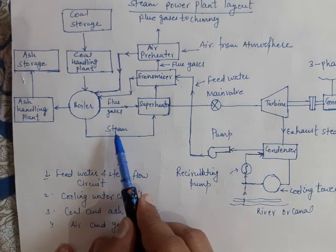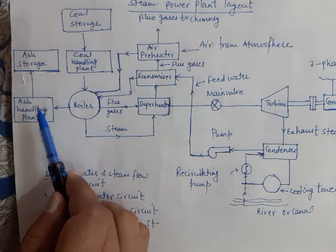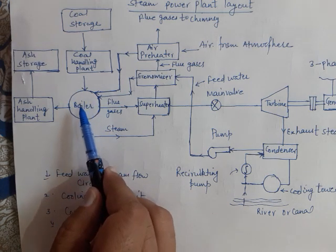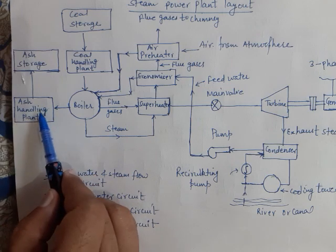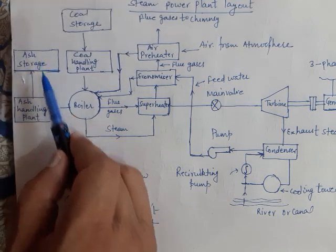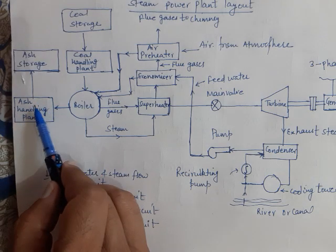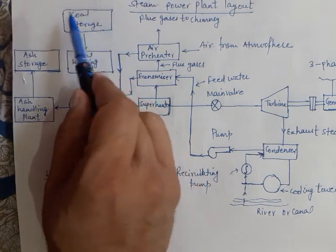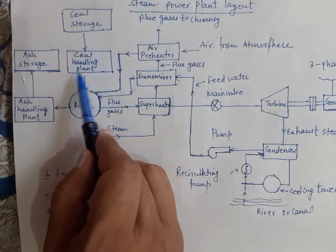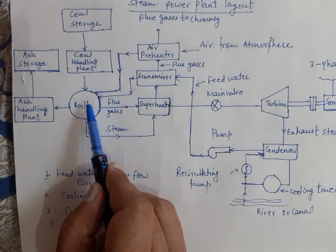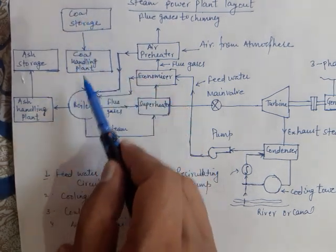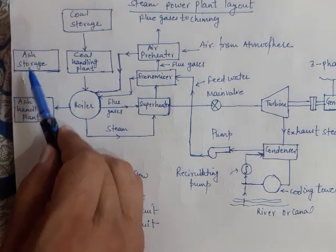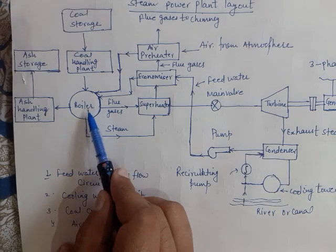Please note, this is the ash handling plant and ash storage. Whatever ash is generated through the combustion of coal is handled by the ash handling plant and sent to the ash storage site. Similarly, there is a coal storage location. The coal handling plant supplies coal from the coal storage site to the boiler as per need.